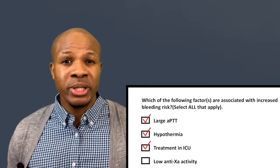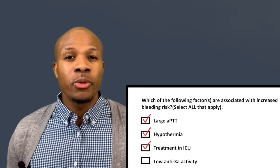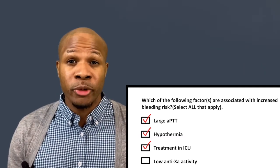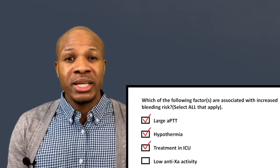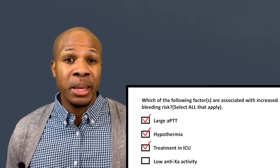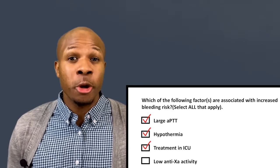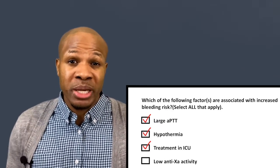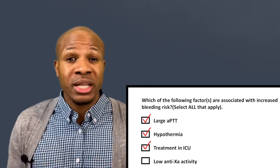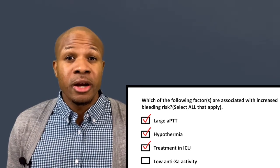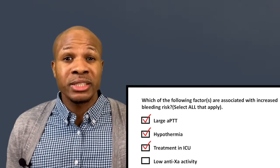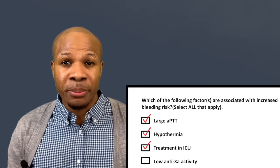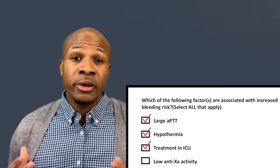Answer choice D says low anti-Xa activity. Anti-Xa activity is what we measure when we give a patient heparin — instead of measuring heparin concentration directly, we measure heparin's anti-Xa activity. If a patient has very low anti-Xa activity, there is very little heparin in the blood, the clotting factors are not being inhibited, and they can form clots normally. So this would not be a correct answer.